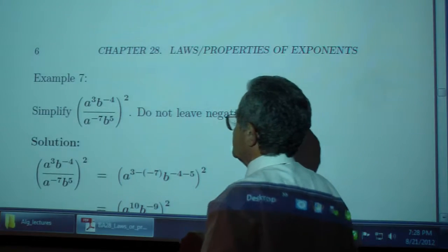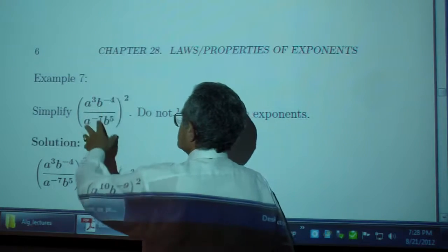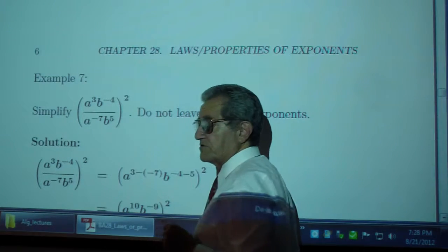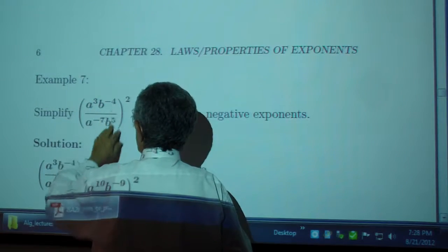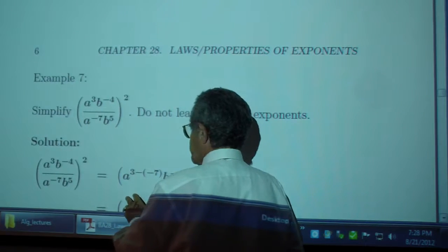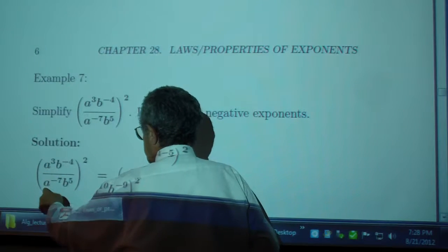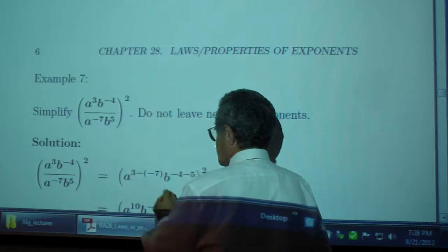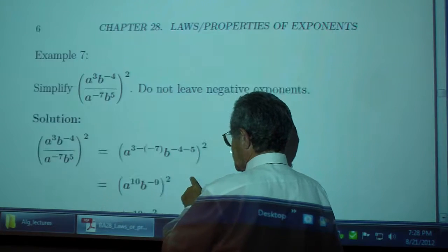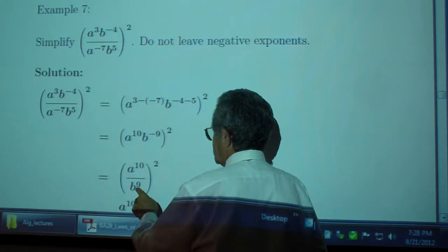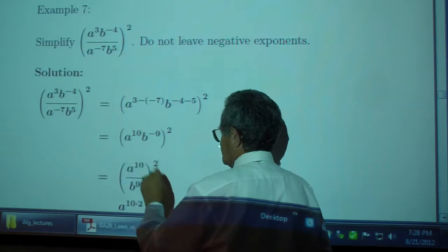Now this becomes more interesting. There are several ways of doing this, not including the wrong ways. So we can work with the inside first and simplify that. We get 8 to the 3 minus negative 7, so 8 to the 10th. B to the negative 4 minus 5, negative 9, or positive 9 in the denominator, exponent positive 9.